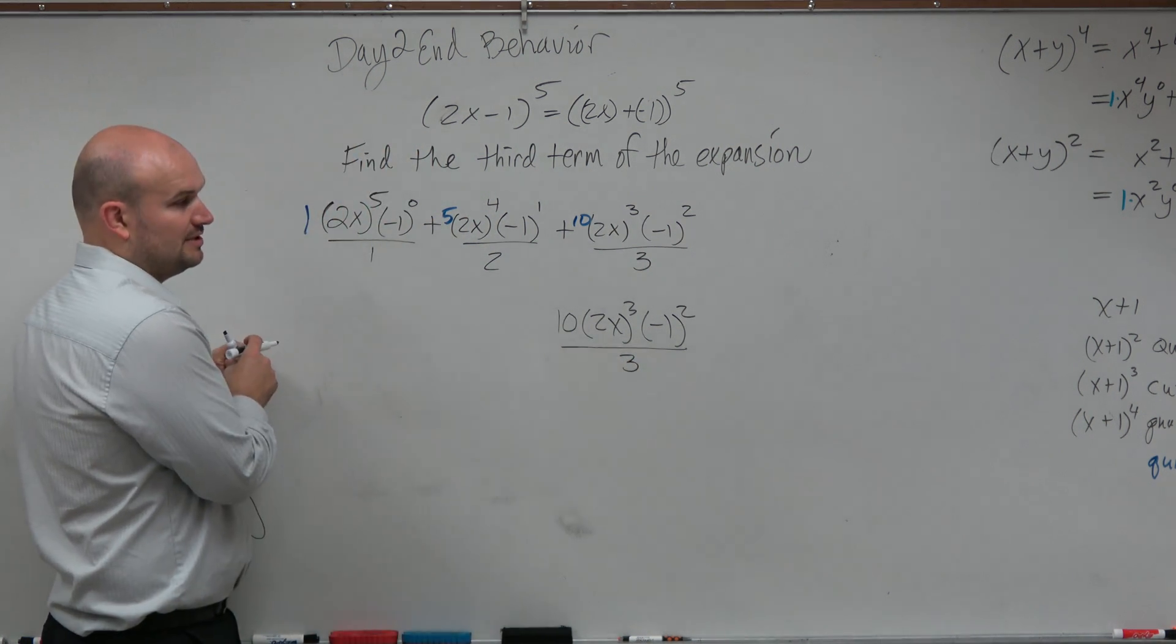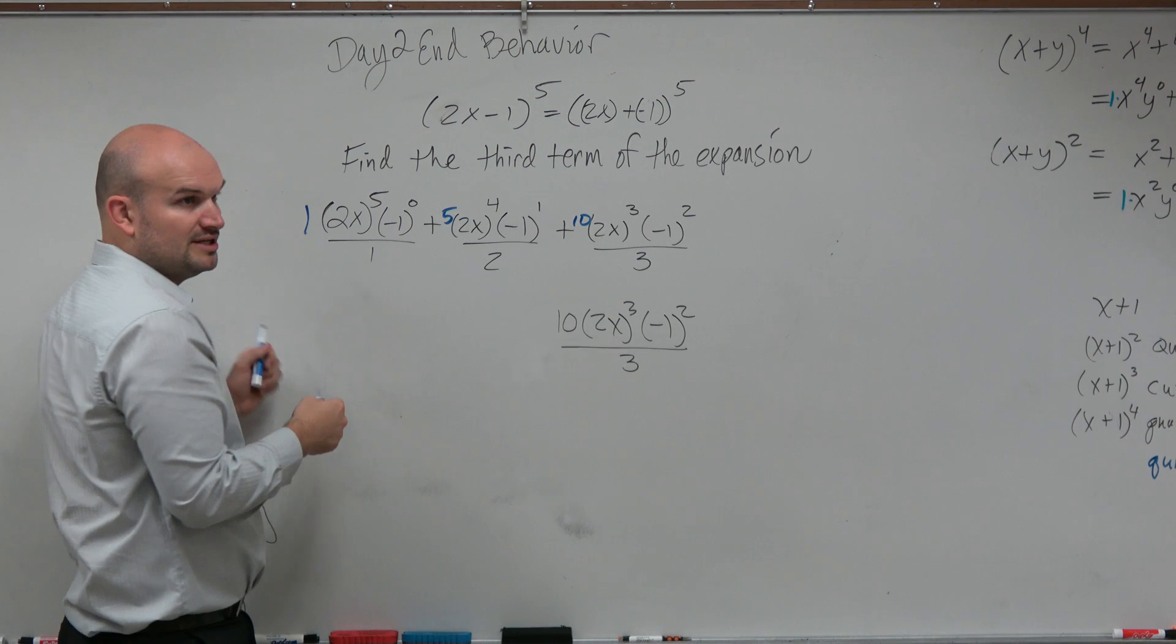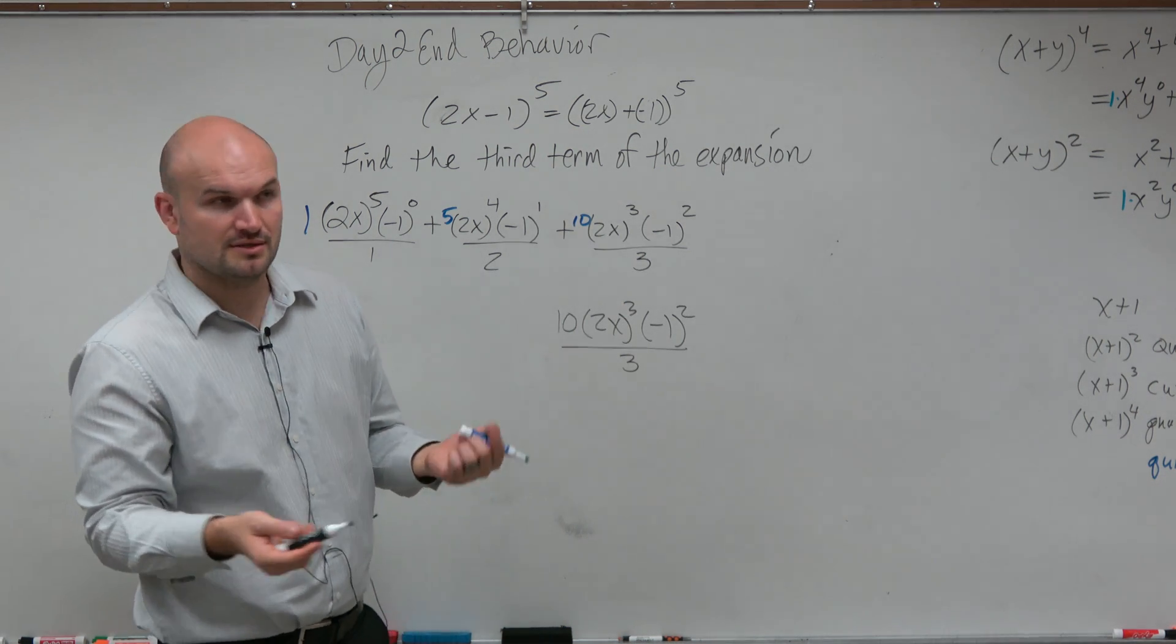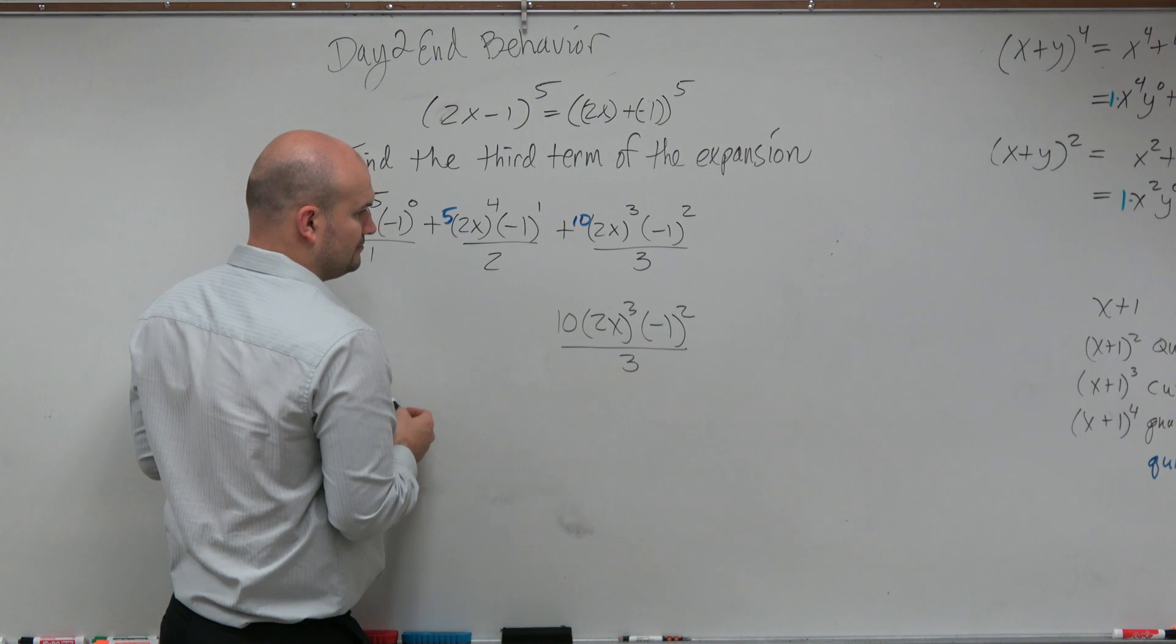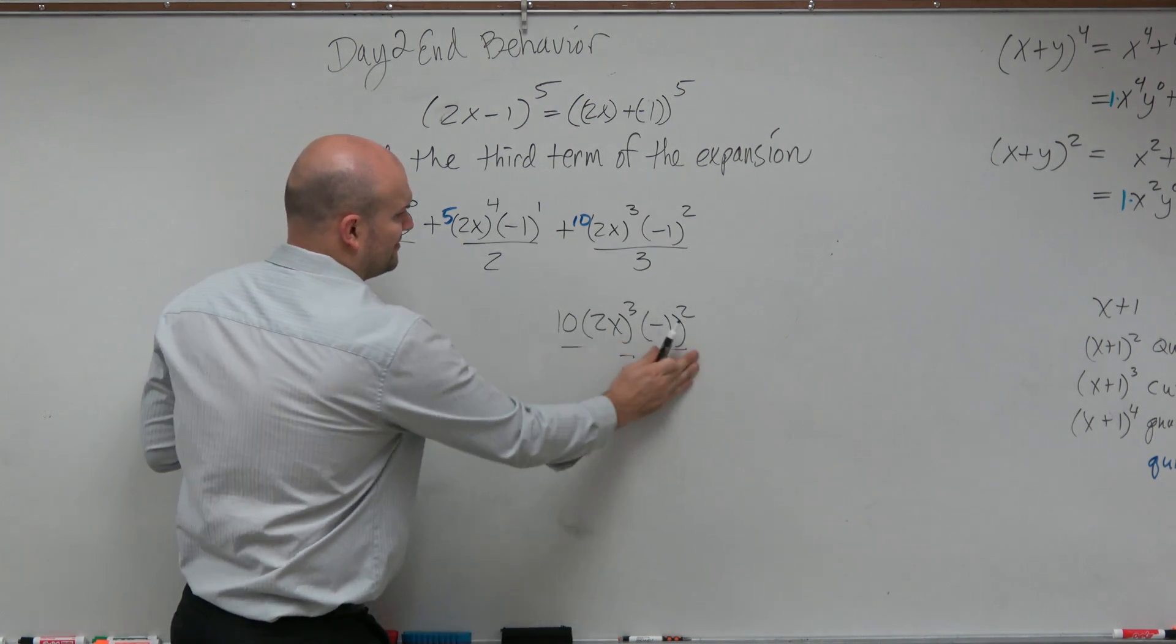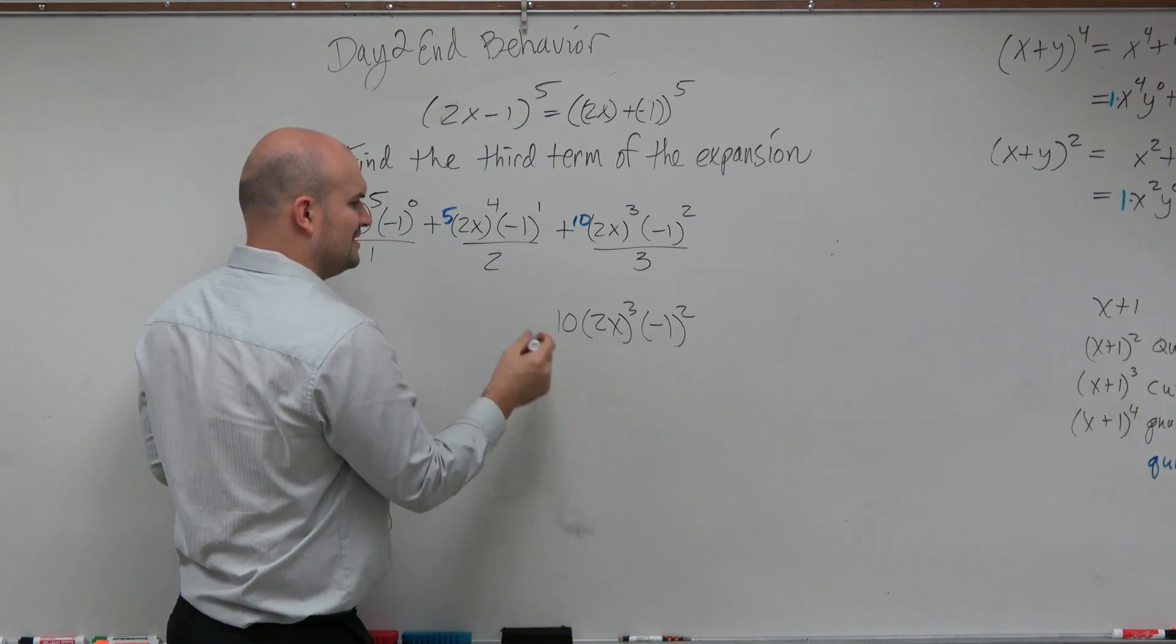And now what I simply need to do is just simplify this. So 2x cubed is 2x times 2x times 2x, or really 2 cubed times x cubed. I don't know why I got confused by right over 3. Yeah, it's just right there, right?